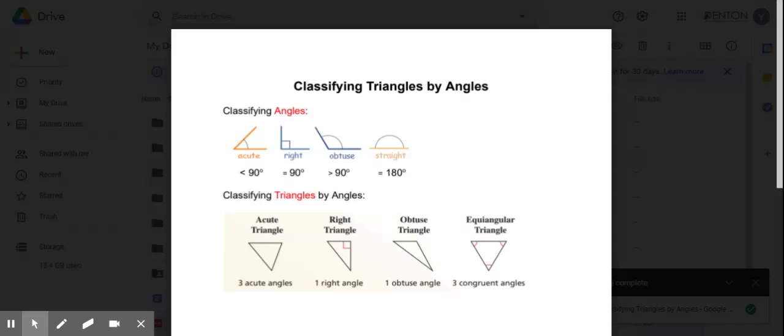Third type, obtuse triangle. One of the three is an obtuse angle. All these three have the same names as the classifications of angles. The fourth type is a special case.